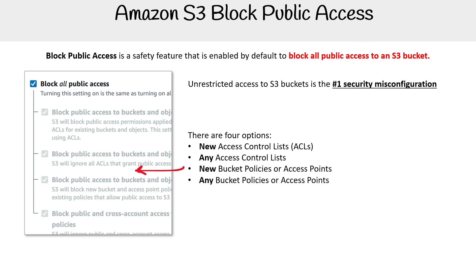The times we're going to be turning off Block Public Access is when we want to give anonymous access — for example, when you are trying to provide static website hosting, or you want people to publicly download read-only files from S3. There are a few use cases, but you can largely work around that issue by having CloudFront in front of it and reduce your security risk that way.